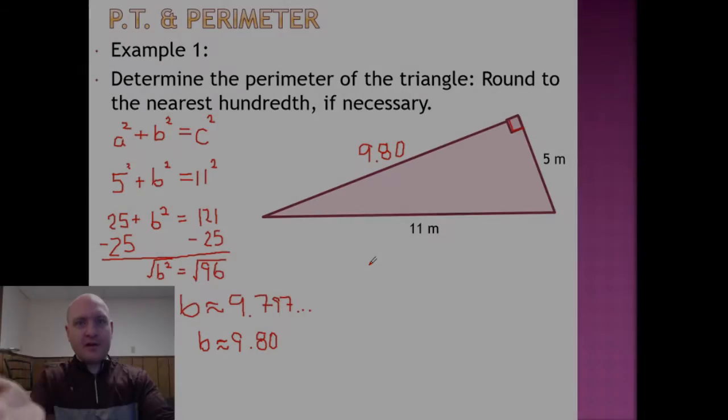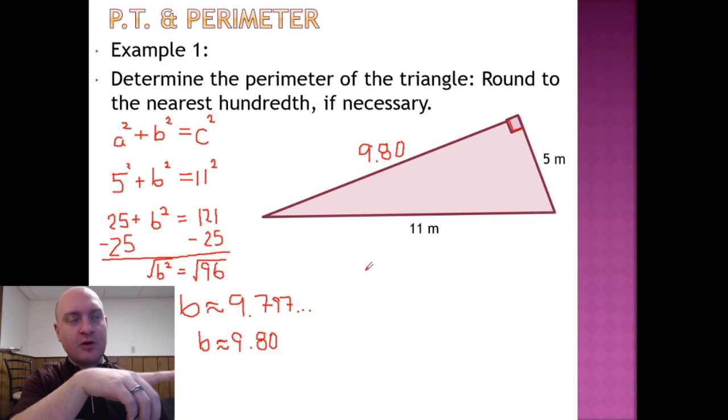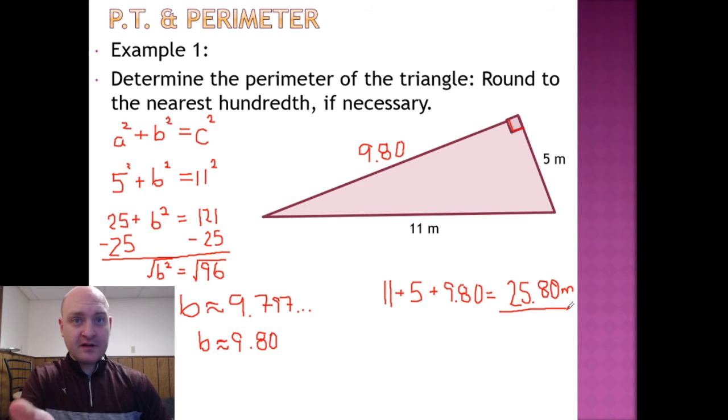Whoa, whoa, whoa, where are you going? We're not done. No, no, no. Come on. So we need to get the perimeter. We have to get the total perimeter. We haven't answered the question yet. So we have to go in and say 11 plus 5 plus 9.80. There now we have the perimeter. Our final answer is 25.80.